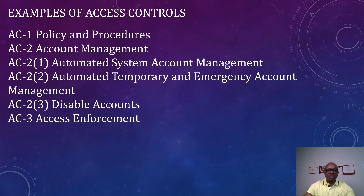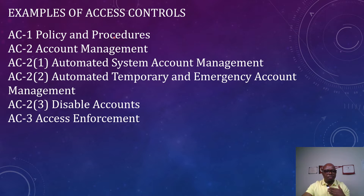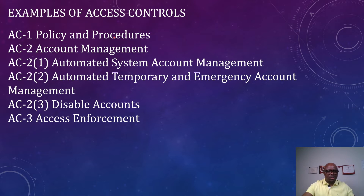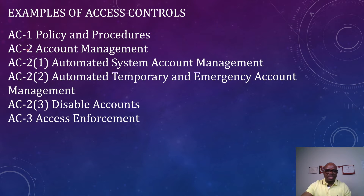Here are some examples of access control. AC-1 is Policy and Procedure. Access control number one means that every organization that implements access control must have a policy in place regarding how access control must be implemented, and they must have a procedure on how to go about implementing that access control.